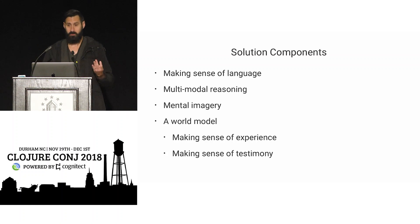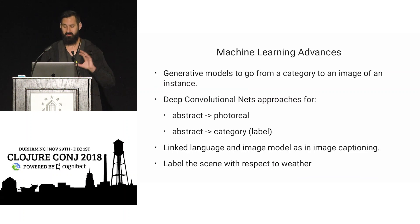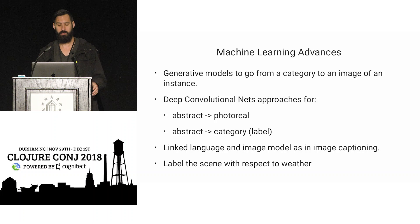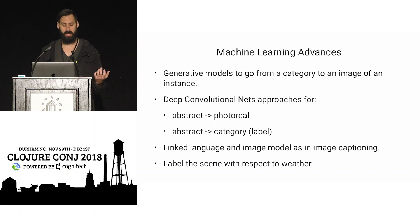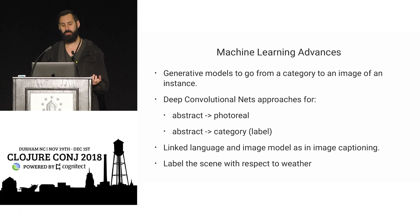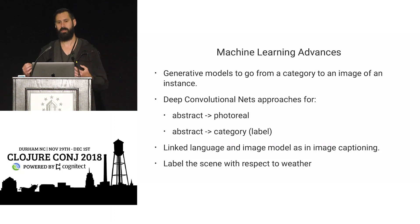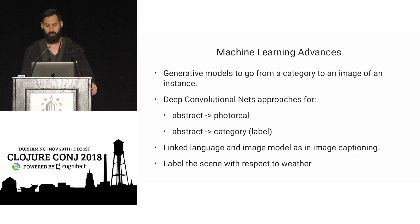This is beyond the state of the art. In software engineering, you solve problems like this by breaking them down into parts. The solution components require: making sense of language, engaging in multimodal reasoning, going back and forth between language and visual imagery — including both abstract and photo-real components — having a world model, reasoning from experience or data, and doing so quickly and systematically. We've made progress in machine learning on each of these pieces individually.